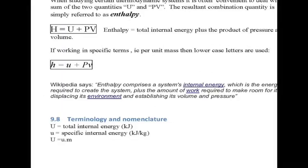To summarize the notation: capital U is total internal energy in kilojoules; lowercase u is the specific internal energy in kilojoules per kilogram — per unit mass. It follows that capital U equals lowercase u multiplied by the mass you're dealing with.